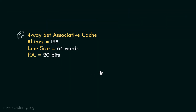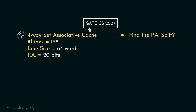So far we have seen quite a few numerical problems and a significant amount of previous year questions on different types of cache memory mapping techniques. To make today's session more engaging, here is some information for you all: suppose you are given a 4-way set associative cache where the number of lines is 128, line size is 64 words, and the physical address is 20 bits. Find the physical address split. This is a question from GATE Computer Science 2007. Feel free to write your answers in the comment section.